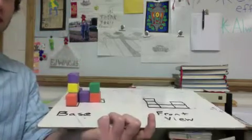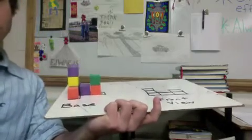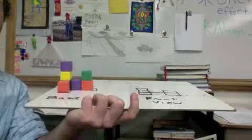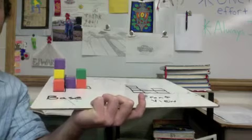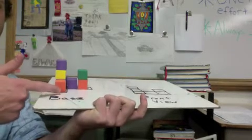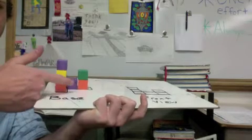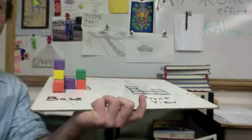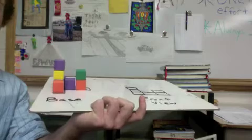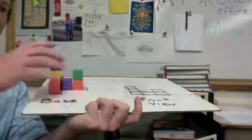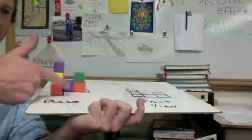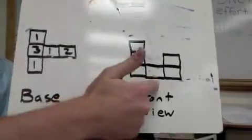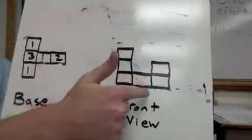Starting with the front view — what you can see from the front is just how tall each column is. From the front you can see it's three tall, one tall, and two tall. So when we draw our front view, it's just a flat representation: three, one, two.